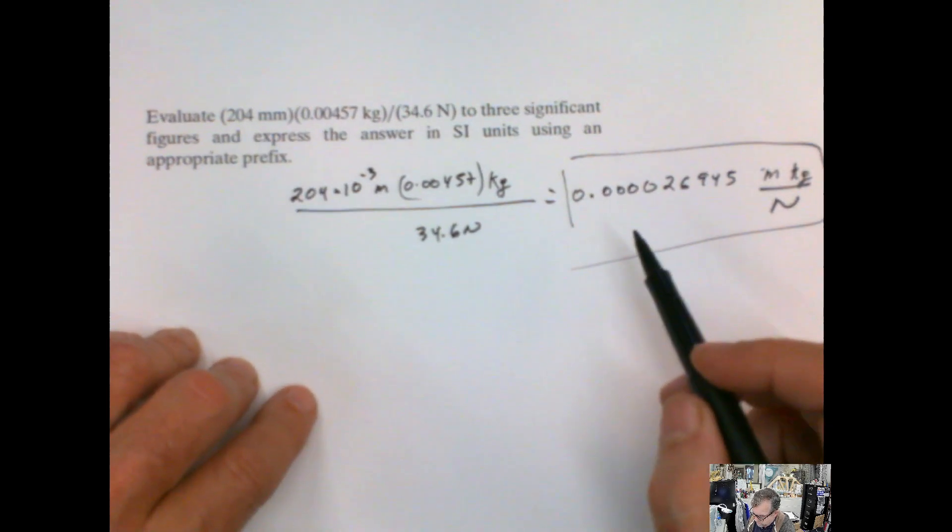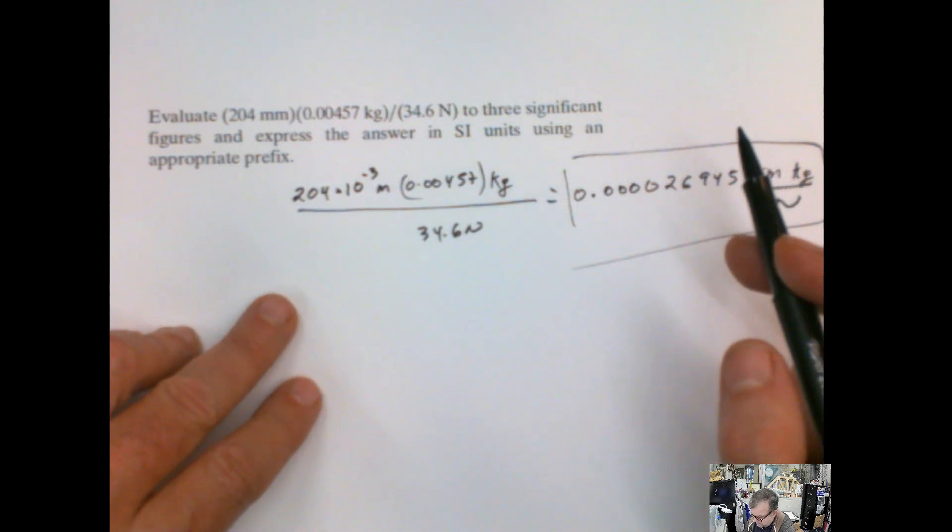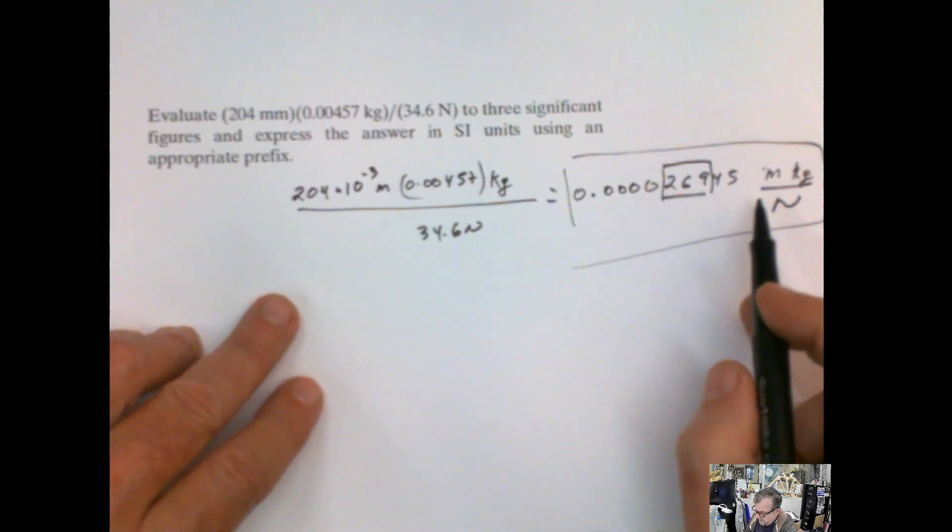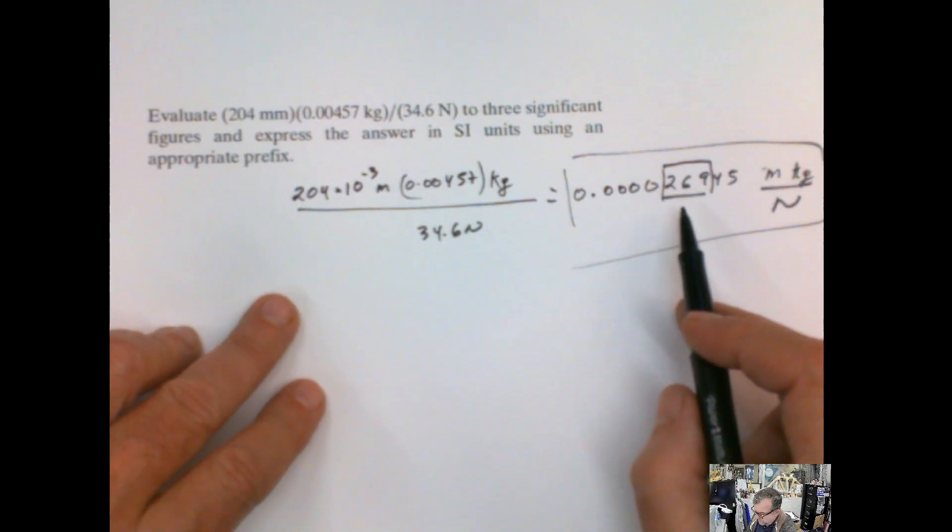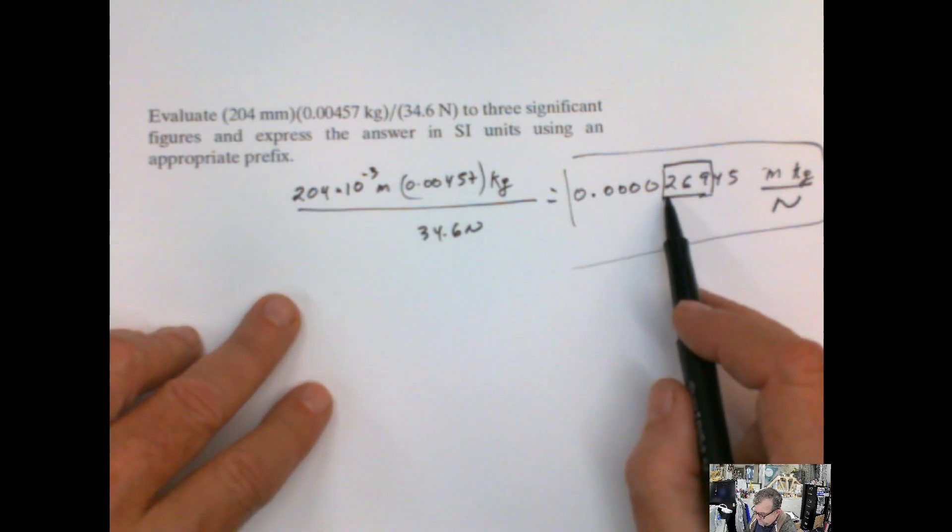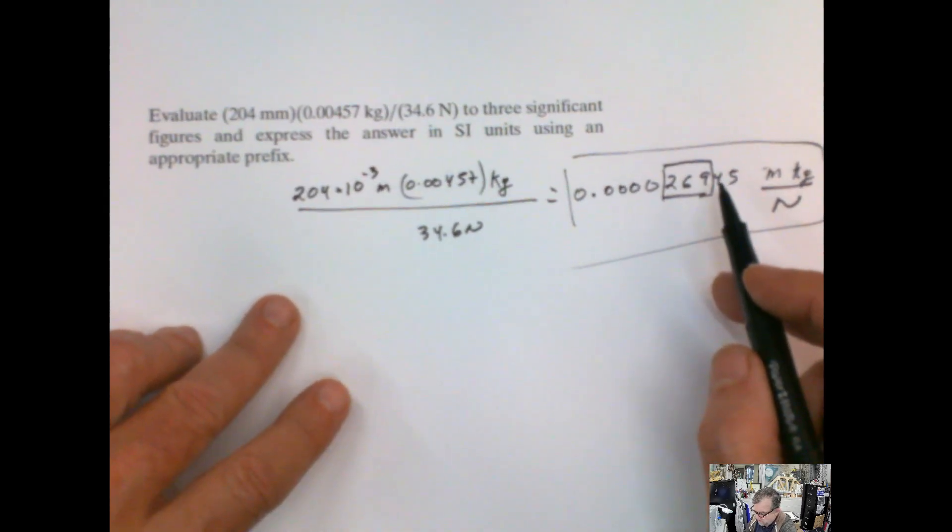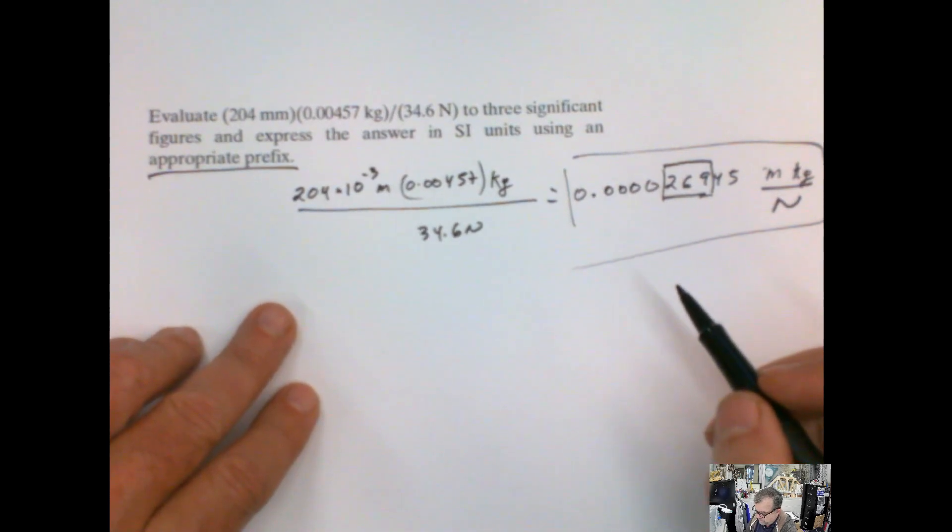This is not, first, I'm not expressing it in significant figures. My significant figures should be these ones here. And second is, I mean, it's a very weird number to write. I can express this always as 269 times 10 to the whatever, or 2.69 times 10 to the whatever. But the key here is using the appropriate prefix.